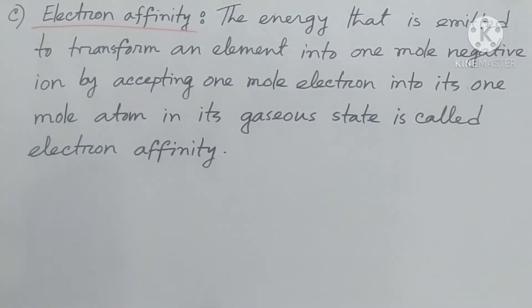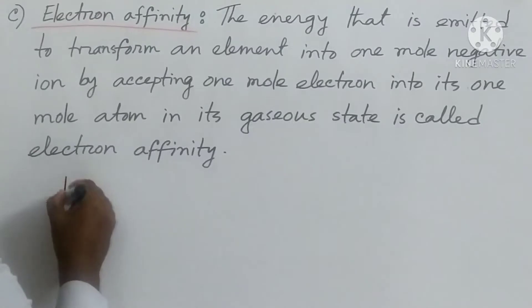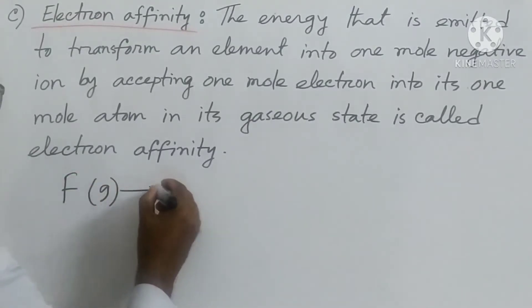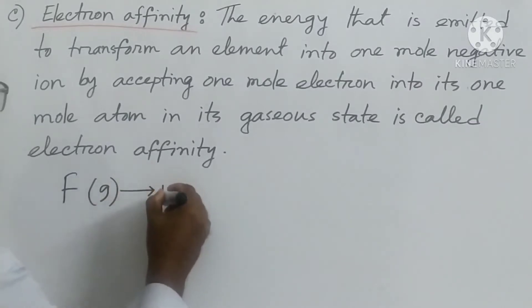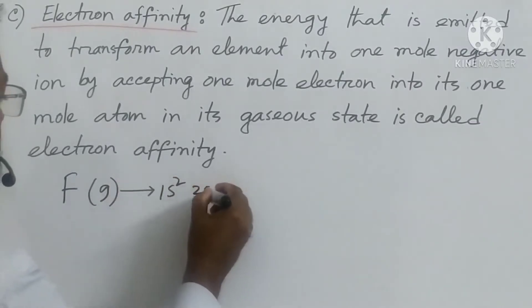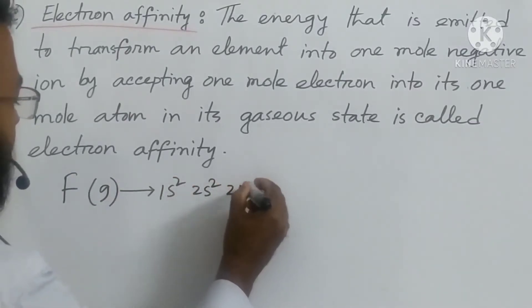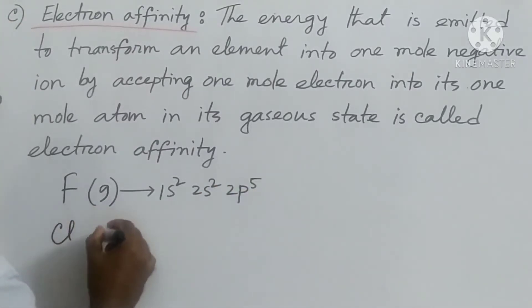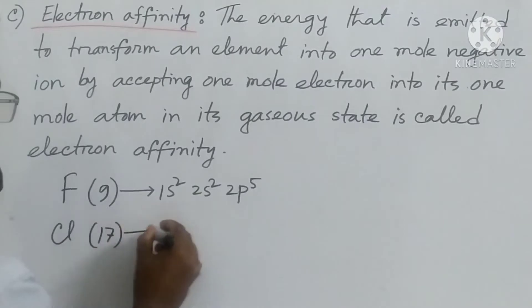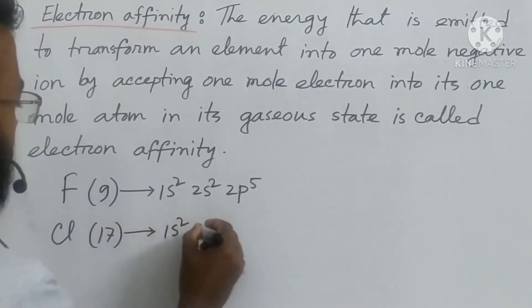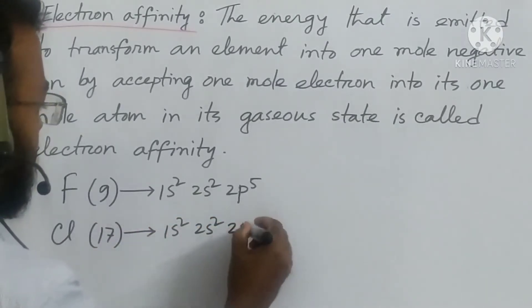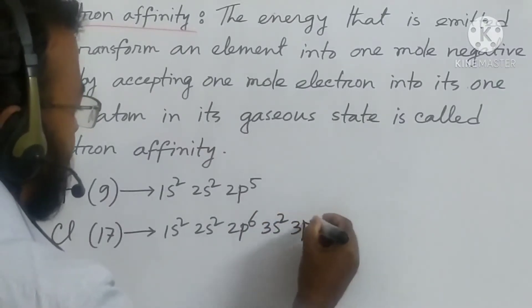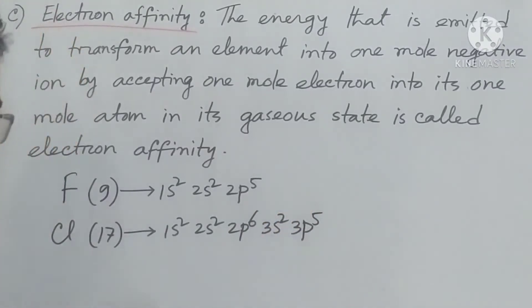Now, fluorine and chlorine. Fluorine has atomic number 9, so its configuration is 1s², 2s², 2p⁵. Chlorine has atomic number 17, so its configuration is 1s², 2s², 2p⁶, 3s², 3p⁵.